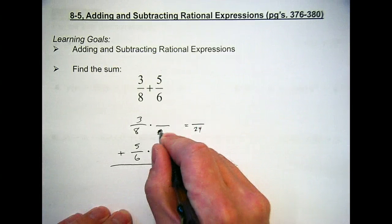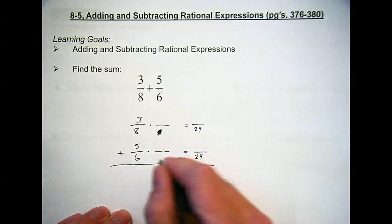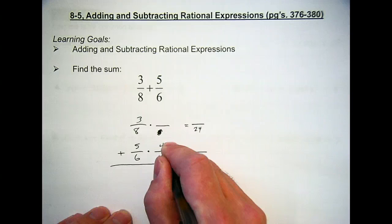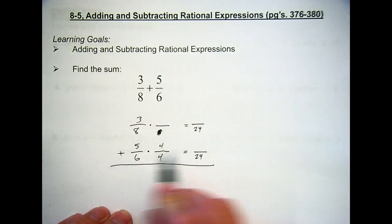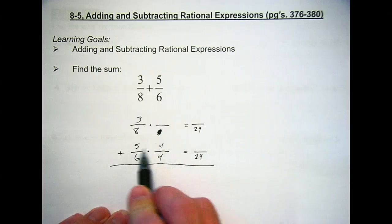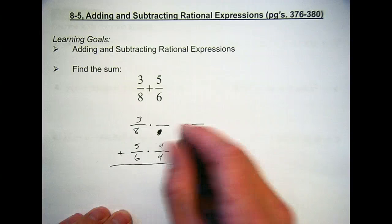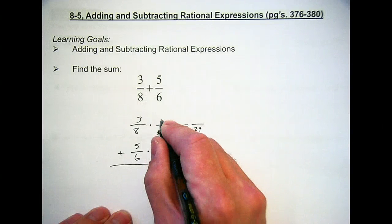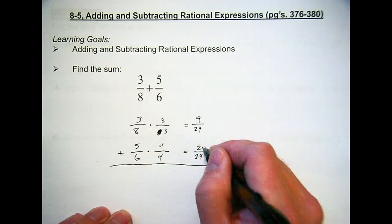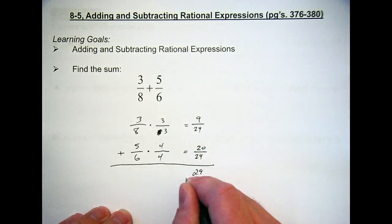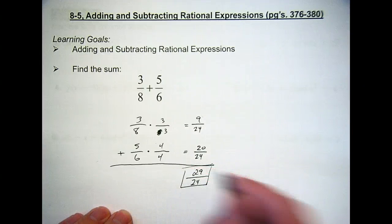What do we multiply 6 by to get 24? 4. And so this becomes that special number 1 — 4 over 4 is still 1, so we're not changing its value, just its look. 5 times 4 is 20. 8 times what is 24? 3. 3 times 3 is 9. 9 plus 20 is 29 over 24, and we'll leave it as an improper fraction.